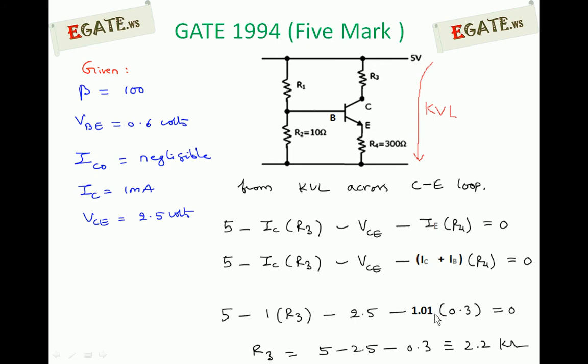If you are going with exact values, this will be 2.197. That is not much difference. So we are making it as 2.2 kilo ohms. Next, we need to calculate R1.